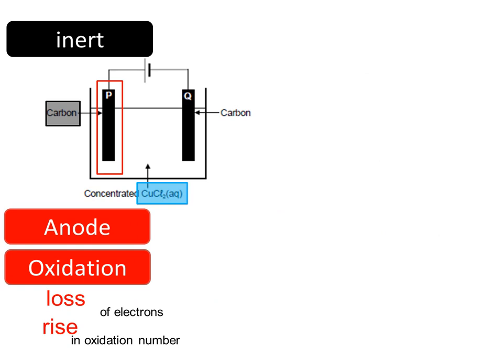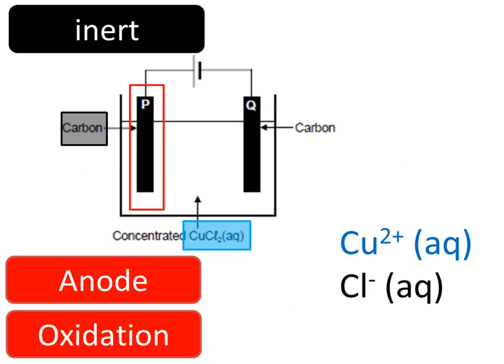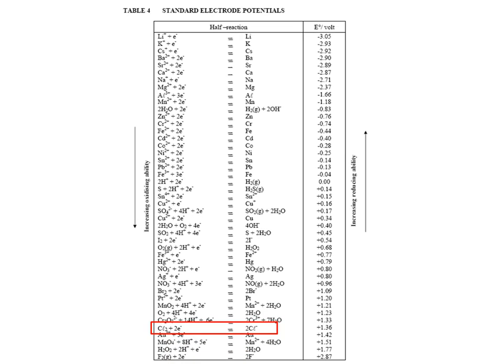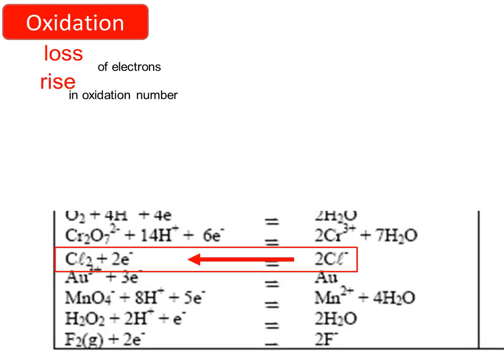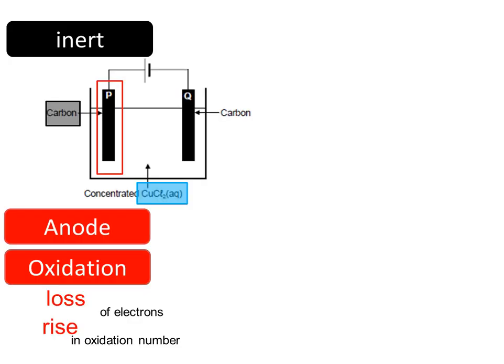Meanwhile, let's remind ourselves what's happening at P. Since P is inert, it cannot react, so it must be the ions in the solution around P which are going to react. There are both copper ions and chloride ions surrounding P. We already know that it's the chloride ions that are going to react, and P is the anode where oxidation occurs. We find chloride and chlorine near the bottom of the standard reduction potential table. Reading the reaction backward for the oxidation half-reaction, chloride ions lose electrons to become chlorine molecules, with the oxidation number changing from -1 to 0. So chlorine gas forms at electrode P.